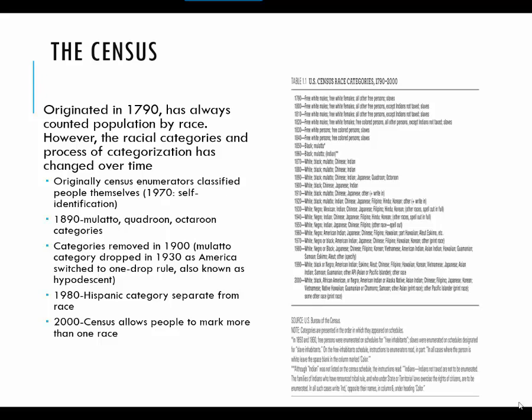By this time, America had largely embraced the one-drop rule, also known as hypodescent — the idea that any known minority blood makes you a minority. Blood quantum didn't matter anymore: if you were one-eighth black, that was just as black as if you were entirely African American. This makes sense when you consider where half the country was at this point — this was the time period where pretty much everything was segregated by law, with separate black and white water fountains, lunch counters, and schools. The social construction of blackness became even more rigid during this time.